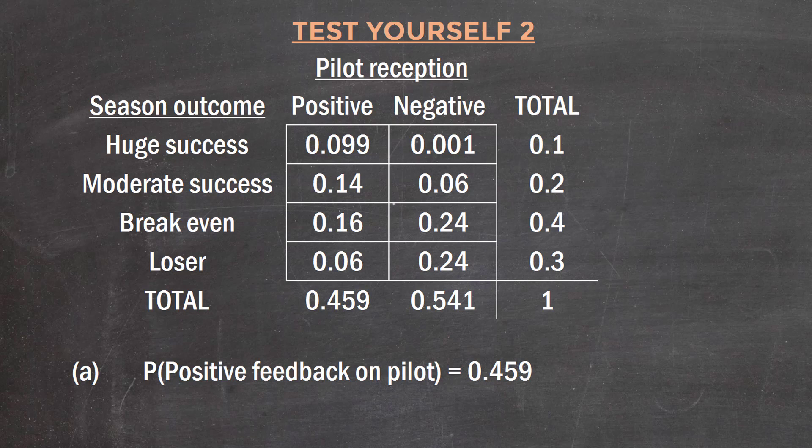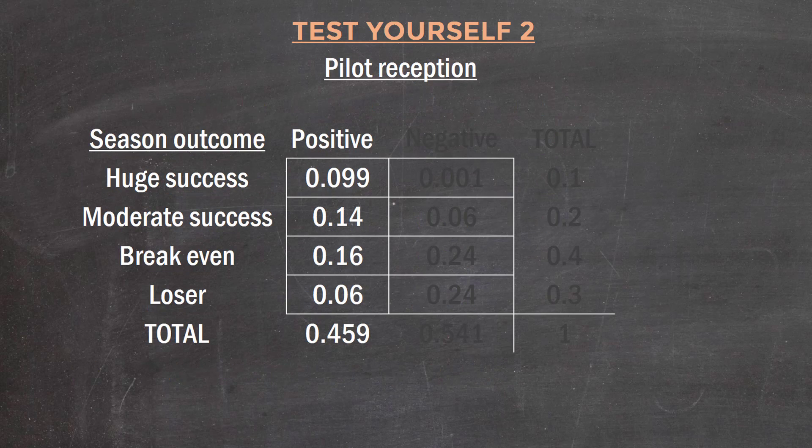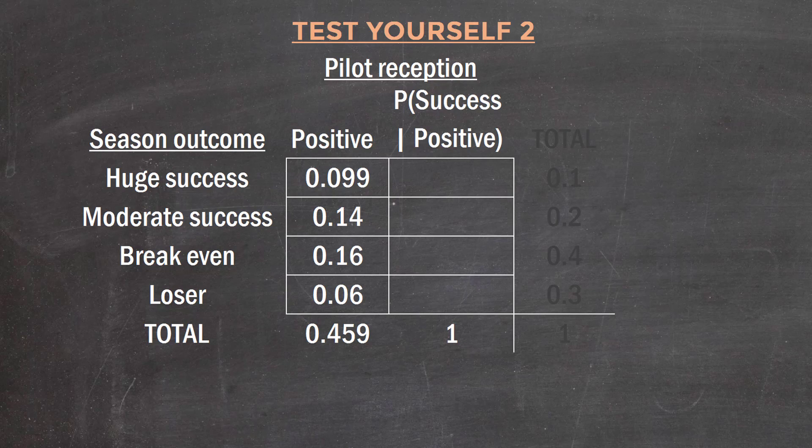Now the second question is a bit more interesting. It asks us for the new probabilities of each outcome if we know that the pilot was received well. So here is where the pilot has been received positively. And just like last time, we're going to black out the rest of the table as we're only focusing on this column.